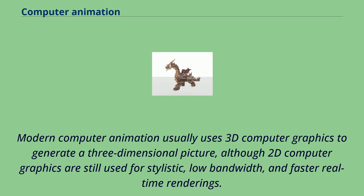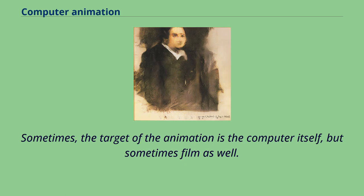Modern computer animation usually uses 3D computer graphics to generate a three-dimensional picture, although 2D computer graphics are still used for stylistic, low bandwidth, and faster real-time renderings. Sometimes the target of the animation is the computer itself, but sometimes film as well.